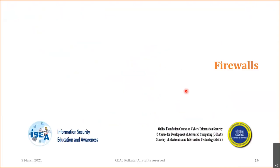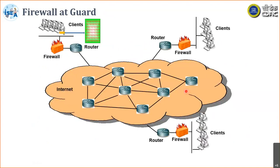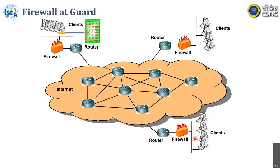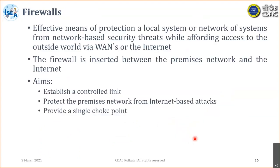Here the role of the firewall comes in. The firewall is placed at every entry and exit point of a network. It protects a system or network from network-based security threats while avoiding unauthorized access from outside via the internet. The firewall is inserted between the premises network and the internet. It aims to establish a controlled link, protect the premises network from internet-based attacks, and provide a single choke point.